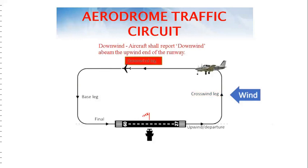The downwind leg is the segment when the aircraft is flying parallel to the runway but in the opposite direction of landing. As per the reporting procedures, when the aircraft is abeam the upwind end of the runway, aircraft shall report downwind.